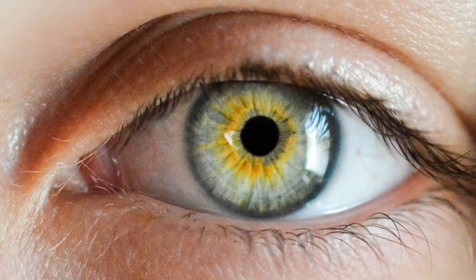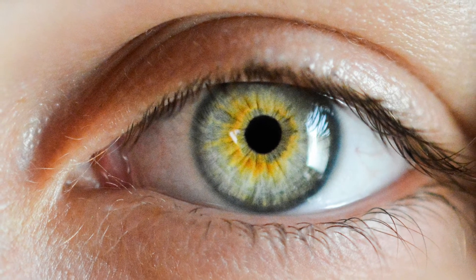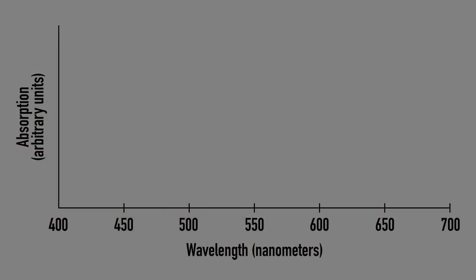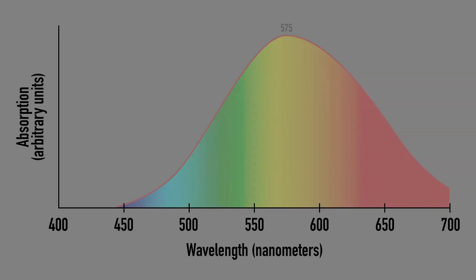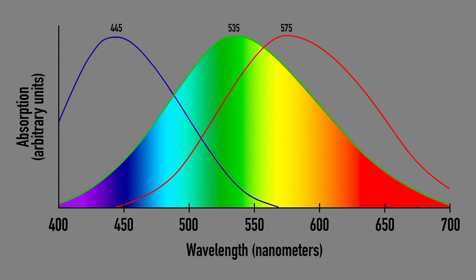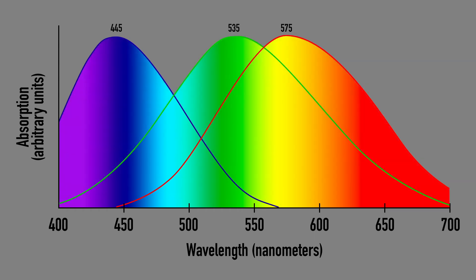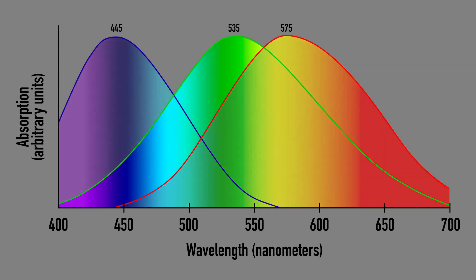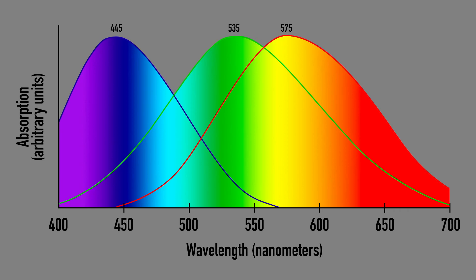What causes color blindness? The cones have different sensitivities, capturing light at different wavelengths. Some cones capture long waves — red; others short waves — blue and violet; and others intermediate lengths — yellow and green. In a colorblind person, there is a lack of one or more types of cones, or at least problems in their normal functioning.